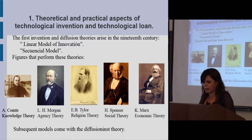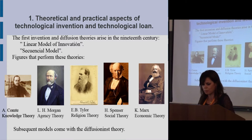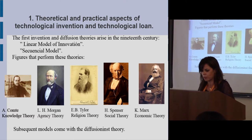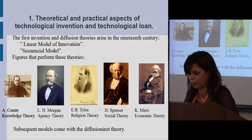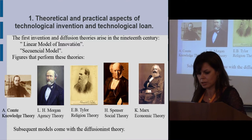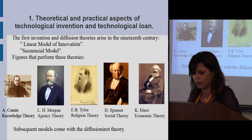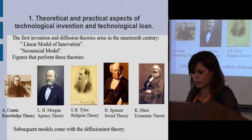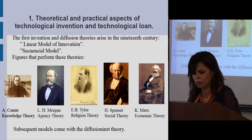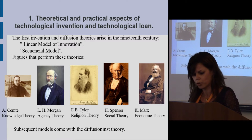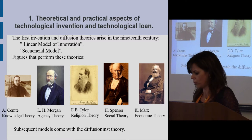This presentation covers the theoretical and practical aspects of technological invention and technological law. The fields of invention and diffusion theories arise in inventory and different study fields, producing two explanatory models of the theory of innovation: the linear model of innovation and the sequential model. Both models attempt to explain how inventions arise and channels of diffusion, reception, or adoption.